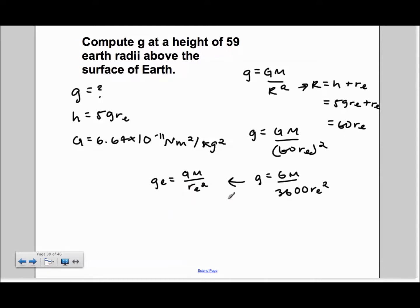Since g is equal to GM over 3600RE squared, we can just plug in GE to get GE over 3600.